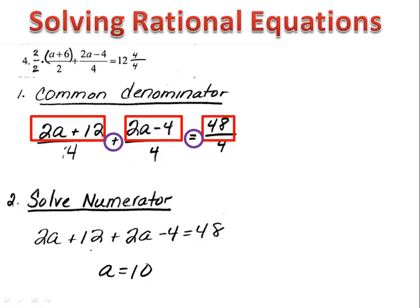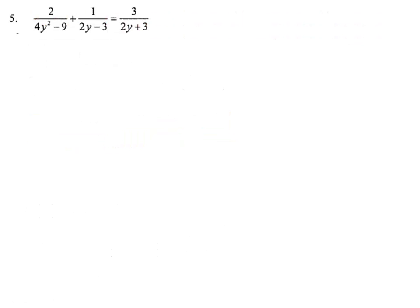As before, because we ignored the denominator, we have to go ahead and check our solution because a equals 10 is simply a possible solution, not necessarily a good solution. So we do our check and we find out that it does work.